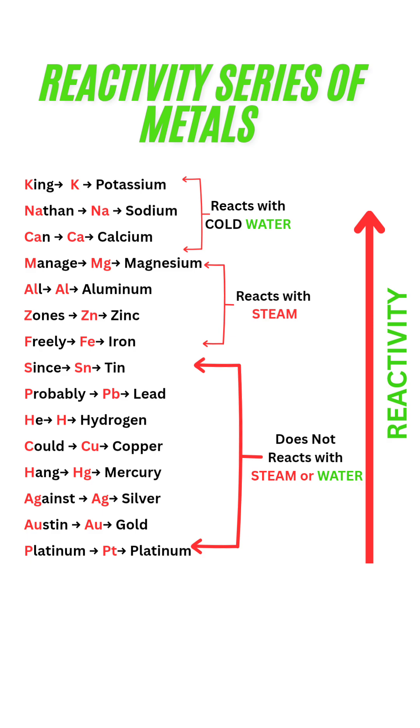It goes this way: King Nathan can manage all zones freely since. Probably he could hang against Austin platinum.